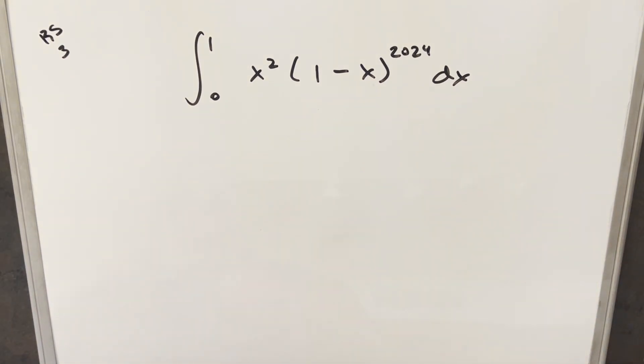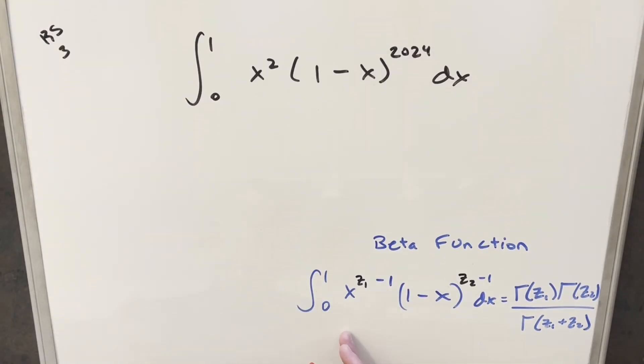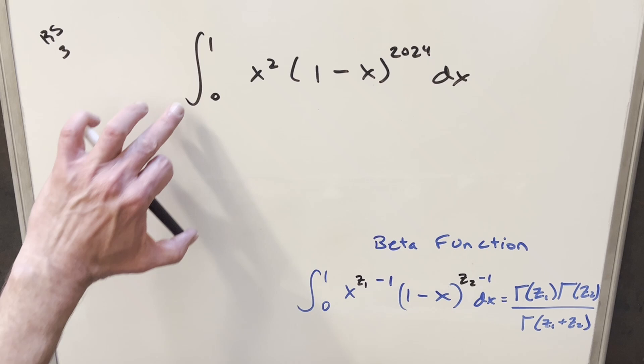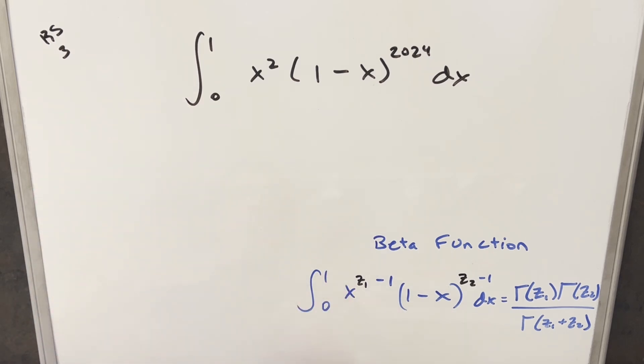But what I wanted to do here instead was just notice that this is in exactly the right form to use the beta function. All right, so we have our formula for the beta function over here to the right. We're in exactly the right form.